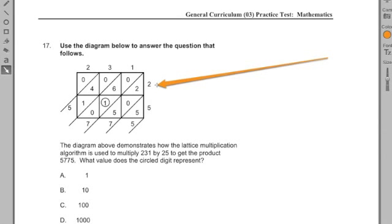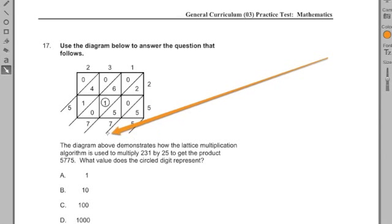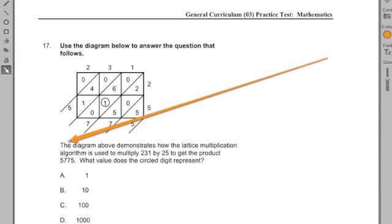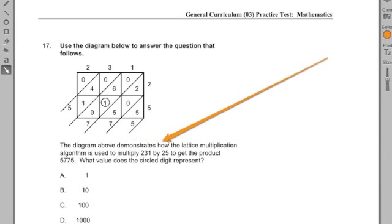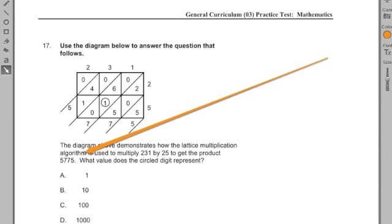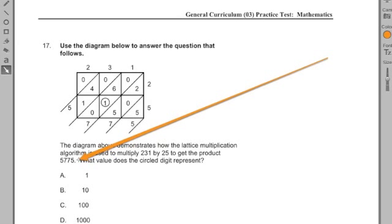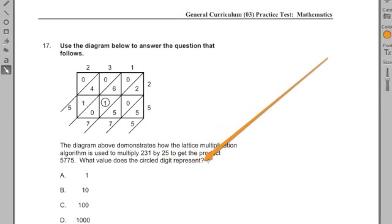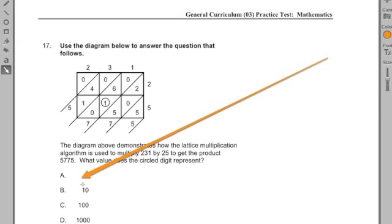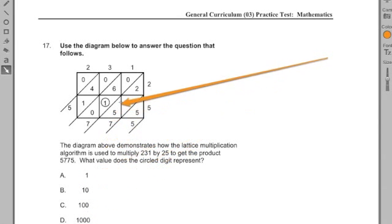If I know how to solve it, it's going to be easy. I've never seen it before, keep on watching. And then I read the problem. The diagram above demonstrates how the lattice multiplication algorithm is used to multiply 231 by 25 to get the product 5,775. What value does the circle digit represent? And then it has these values here. And the circle one is 1. It's a cool problem.